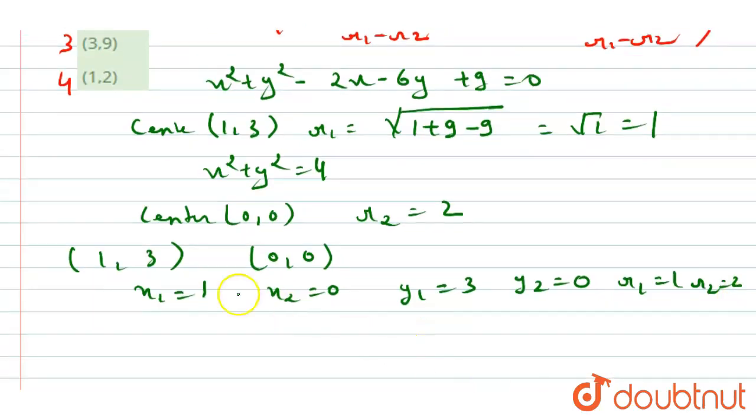Now we will place the values. First is: (x₂ × r₁ - x₁ × r₂)/(r₁ - r₂), so 0 × 1 - 1 × 2 upon 1 - 2.